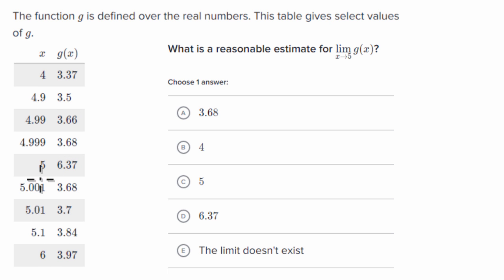But then if we approach five from values greater than five, at six, we're at 3.97, at 5.1, we're at 3.84, at 5.01, 3.7, at 5.001, we are at 3.68. So a thousandth below five and a thousandth above five, we're at 3.68, but then at five, all of a sudden, we're at 6.37.